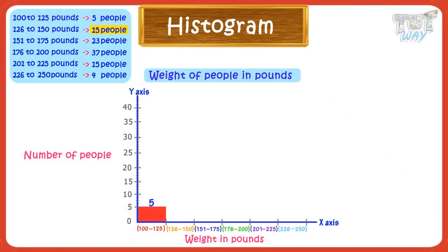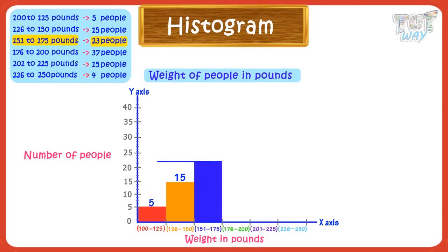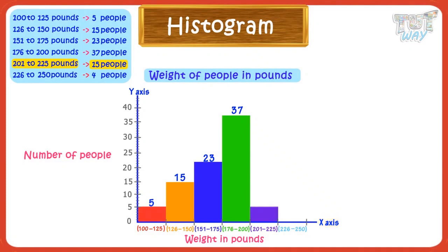Next, we have 15 people in the range of 126 to 150 pounds, so make a bar up to the mark of 15. Next, we have 23 people in the range of 151 to 175 pounds, so make a bar up to the mark of 23. Next, we have 37 people in the range of 176 to 200 pounds, so make a bar up to the mark of 37. Next, we have 15 people in the range of 201 to 225 pounds, so make a bar up to the mark of 15. Next, we have 4 people in the range of 226 to 250 pounds, so make a bar up to the mark of 4.